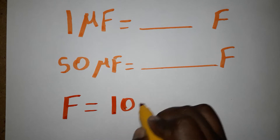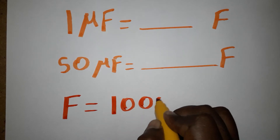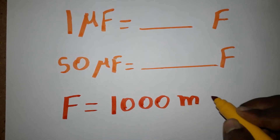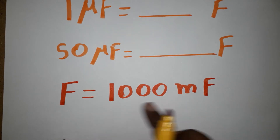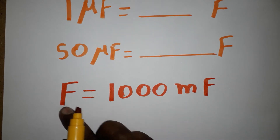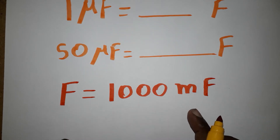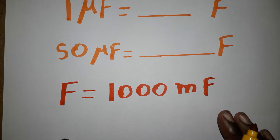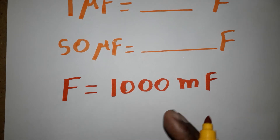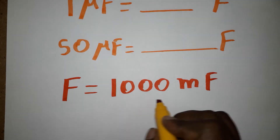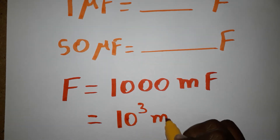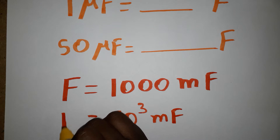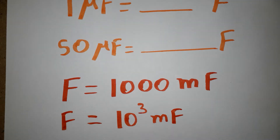One farad is equal to 1000 milli farads. The prefix here is 'milli'. From 1 to milli, it is 10 to the power of 3, so we can write 1000 as 10 power 3. Therefore, one farad is equal to 10 power 3 milli farads.